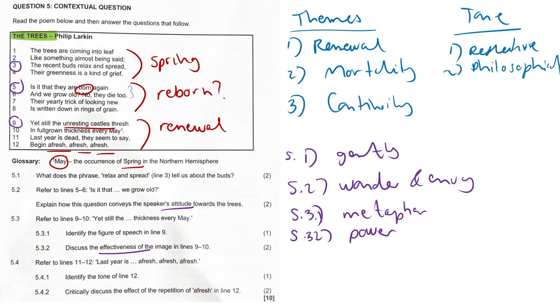5.4.1: Identify the tone in lines 11 and 12. The tone here I believed was rather hopeful and optimistic. It conveys renewal and the positive continuation of life. My accounting kids, it's giving going concern vibes.